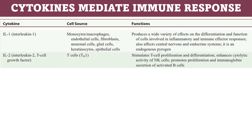The first cytokine is interleukin-1. Cell sources include monocytes, macrophages, endothelial cells, fibroblasts, and neural cells. The function of interleukin-1 is to produce a wide variety of effects on the differentiation and function of cells involved in inflammatory and immune effector responses; it also affects the CNS and the endocrine system. It is an endogenous pyrogen.